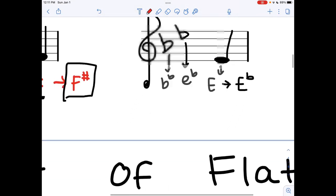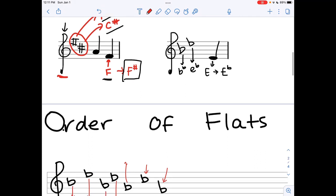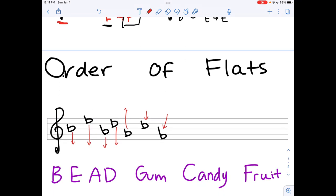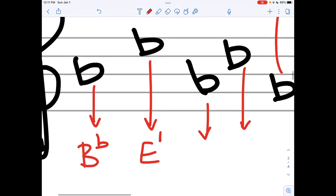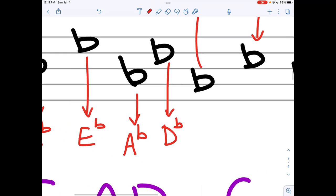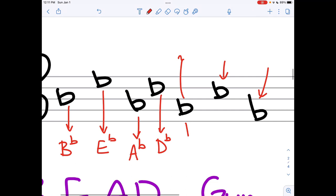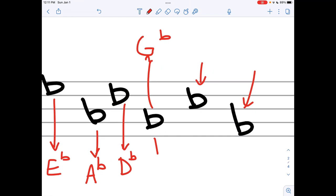The first thing that we have is the order of flats. The order of flats, similar to the order of sharps, also has a pattern. Let's go through the order. First one is B flat, the second one is E flat, then A flat, then D flat, then we have G flat, then we have C flat, and finally we have F flat.